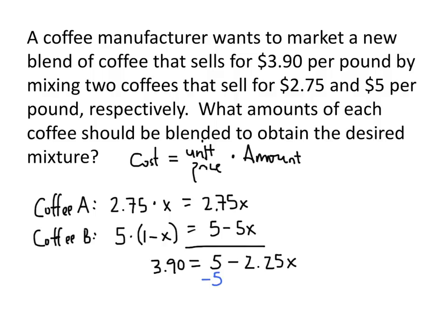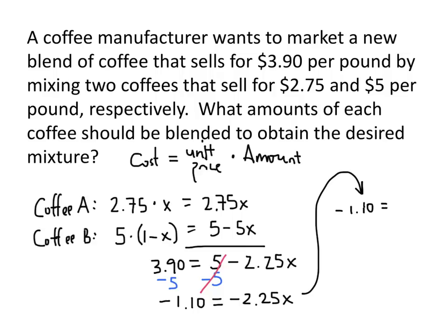Let's subtract 5 from both sides. We still have negative 2.25x on the right-hand side; the 5 and minus 5 cancel out, and 3.90 minus 5 is negative 1.10. Now I want to divide both sides by negative 2.25 to get x by itself. The negative 2.25's divide out, and on my calculator, negative 1.1 divided by negative 2.25 works out to be approximately 0.4889.